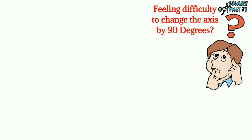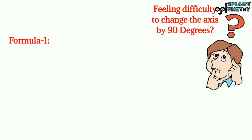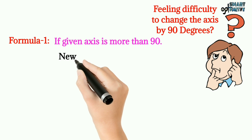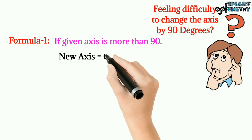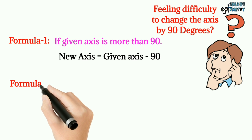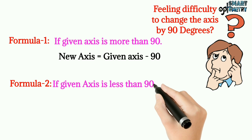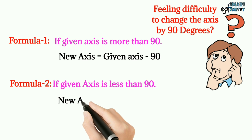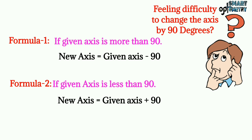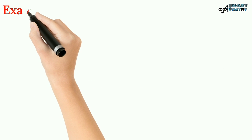Feeling difficulty to change the axis by 90 degrees? There are two formulas you can follow. Formula one: if the given axis is more than 90, then the new axis equals the given axis minus 90. Formula two: if the given axis is less than 90, then the new axis equals the given axis plus 90.